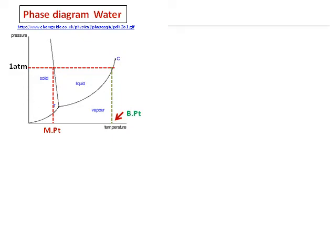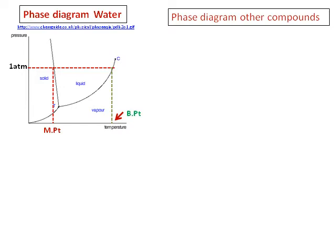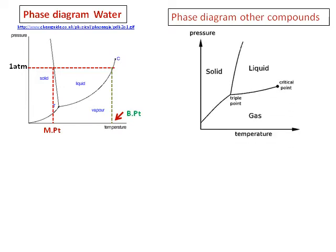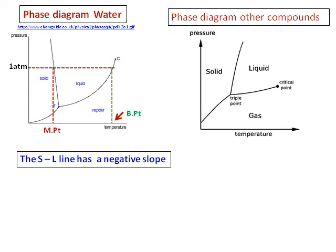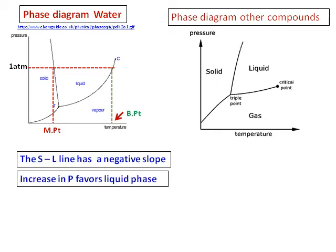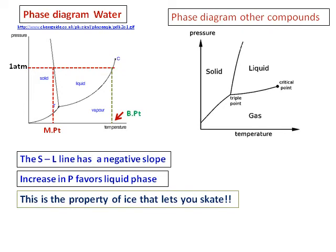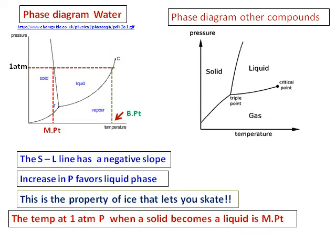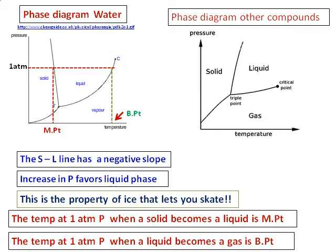How is water's phase diagram different from a normal phase diagram? Comparing the phase diagram of water with other compounds, you realize that the solid-liquid line in water has a negative slope, whereas all other compounds have a positive slope. In the case of water, an increase in pressure leads to the liquid phase. This is an anomalous property of water — for all other compounds, increasing pressure favors the solid state. This property of water, or ice, is what allows you to skate on ice.